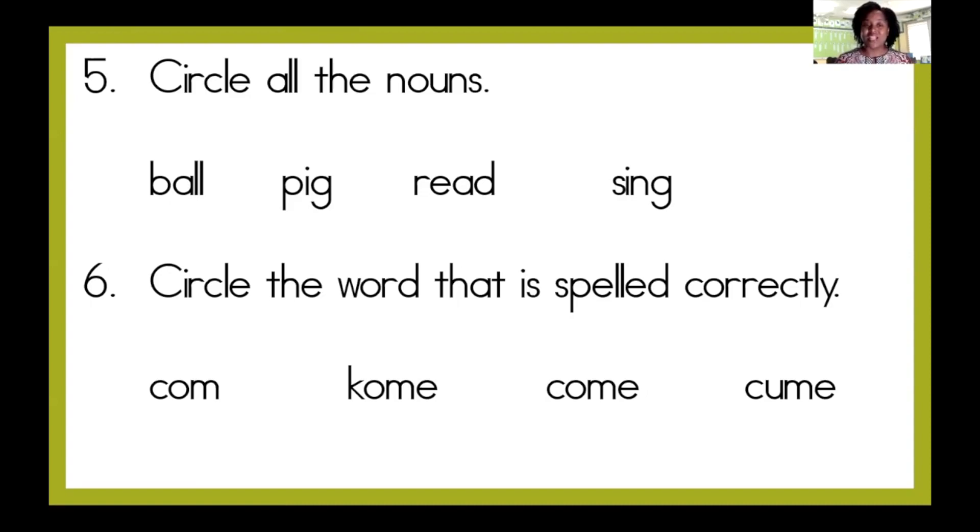Now a ball is something that you play with. A pig is an animal. Read is something that you do. And sing is something that you do. So, our nouns are ball, a thing, and pig, an animal.